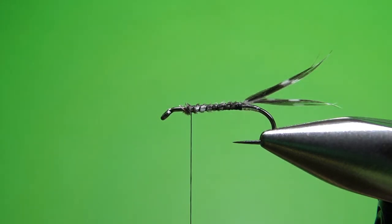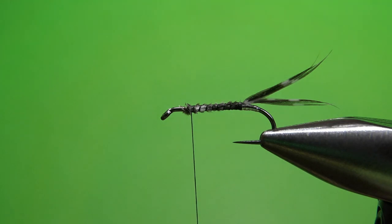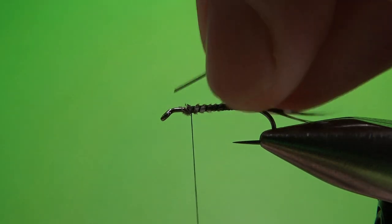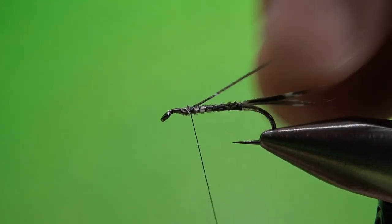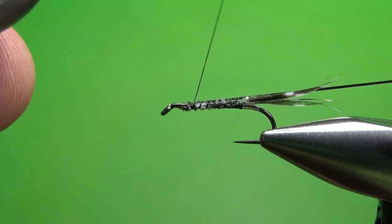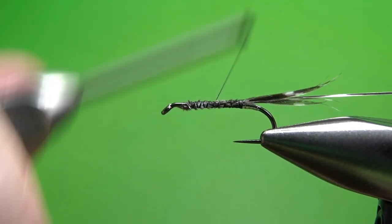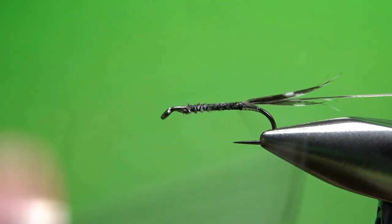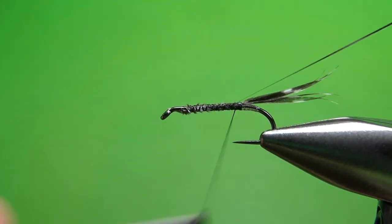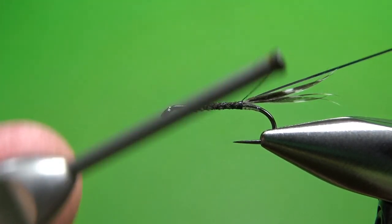Okay, now when you get that up front go ahead and snip this off. And let's take the rest of that tinsel we just used for the tag. I'm going to catch it in right here and then just trap it on my side of the hook going back trying to keep the body smooth.